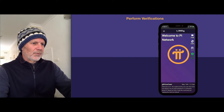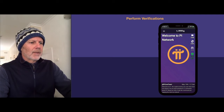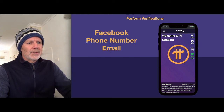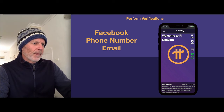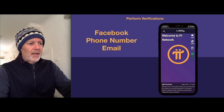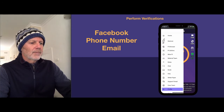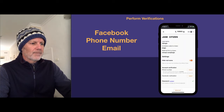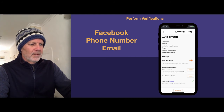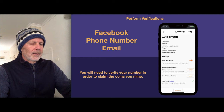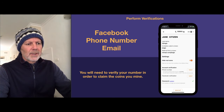Now we need to perform some verifications. We need to do the phone number and email — the Facebook one is optional. So go to the top left of the screen, you've got the three bars that will bring up the menu, and select on profile. When you look down, you've got the phone number and the Facebook verification there. Click on verify for the phone number. You're going to need to do this in order to claim all the coins that you mine, so this one's mandatory.